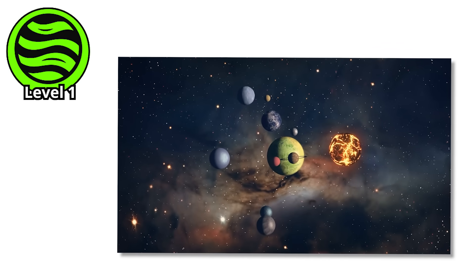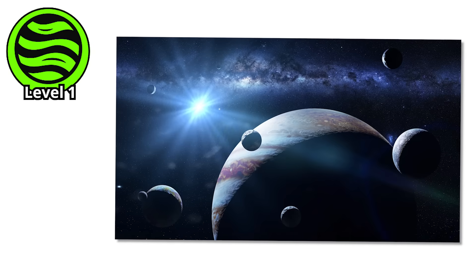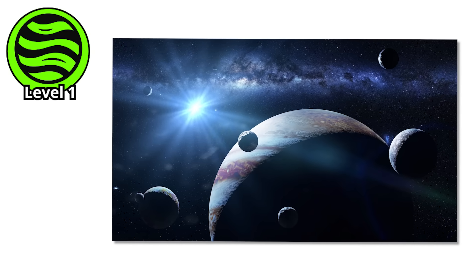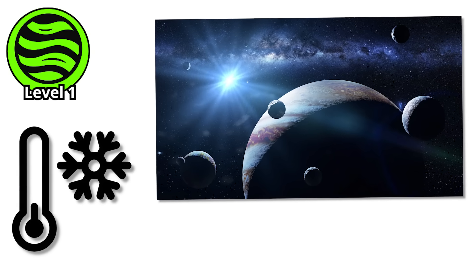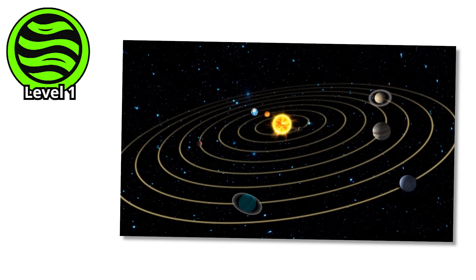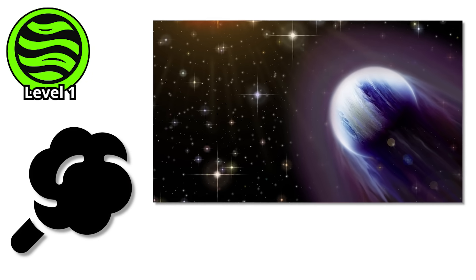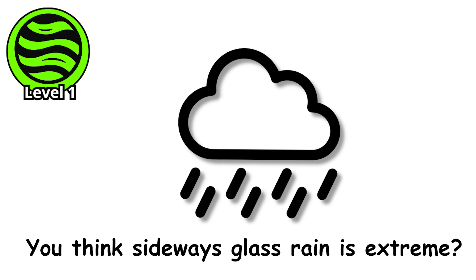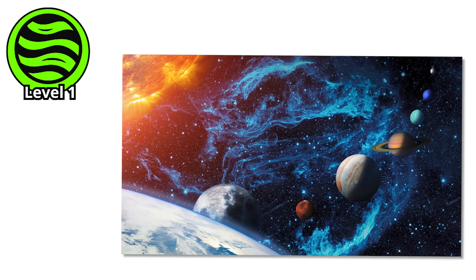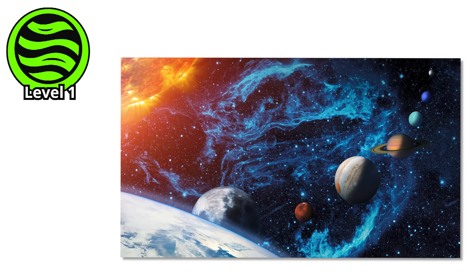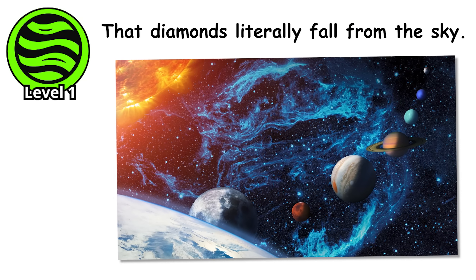These planets shouldn't exist according to our early models. Gas giants need to form far from their stars where it's cold enough for ice to accumulate. Yet here they are, locked in a deadly embrace with their suns, their atmospheres slowly being stripped away into space like cosmic cotton candy in a blowtorch. You think sideways glass rain is extreme? Wait until you meet the planets where the weather is so cold, so alien, that diamonds literally fall from the sky.